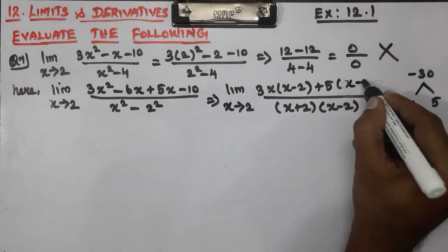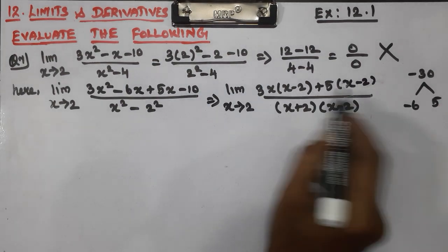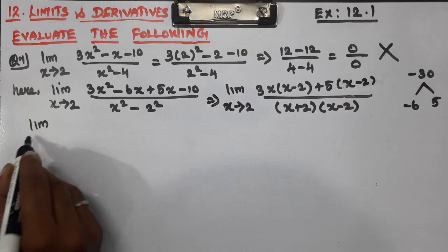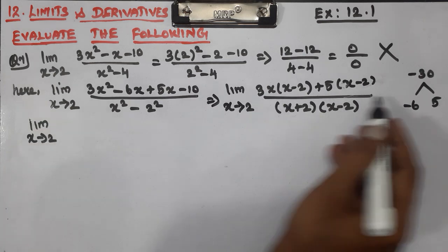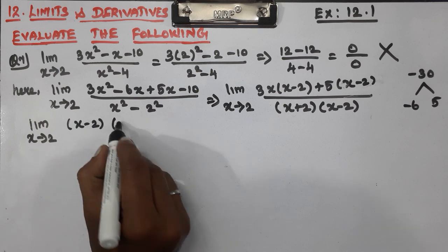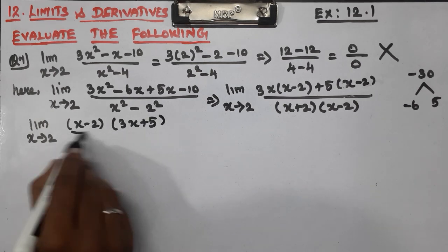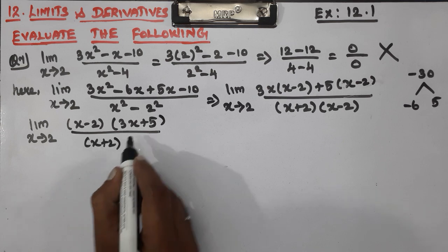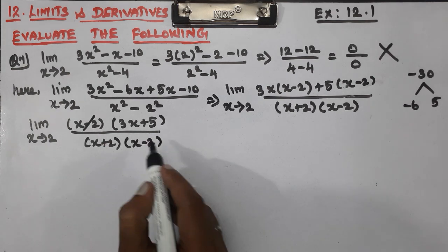So we have x minus 2 as a common factor. The denominator factors as x minus 2 into x plus 2. Numerator has x minus 2, so cancel, cancel — x minus 2 cancels.